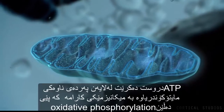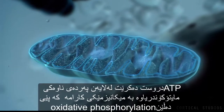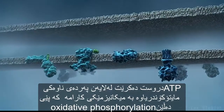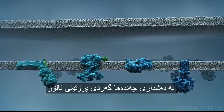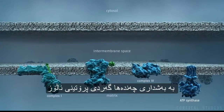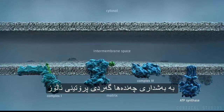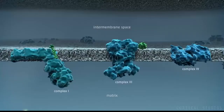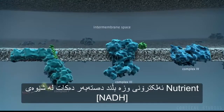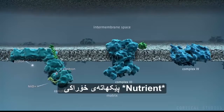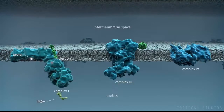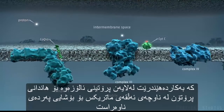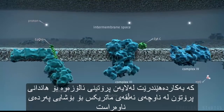ATP is generated at the inner membrane of mitochondria by an efficient mechanism called oxidative phosphorylation, involving several membrane protein complexes. Nutrients provide high-energy electrons in the form of NADH, which are used by the protein complexes to pump protons from the matrix to the intermembrane space.